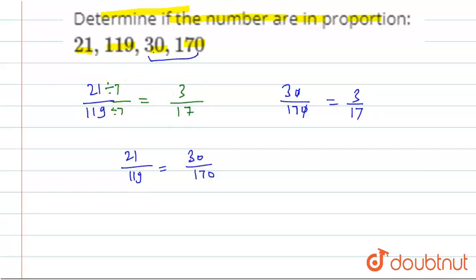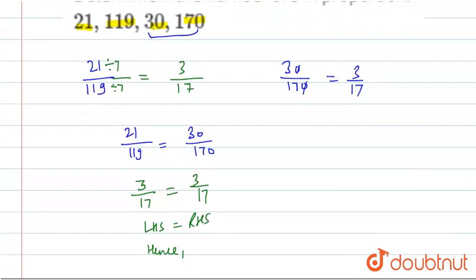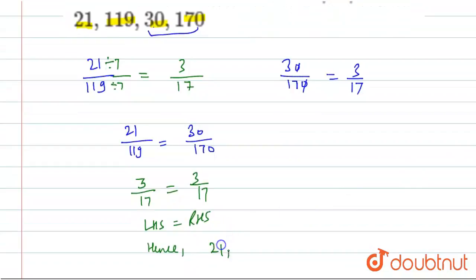Dividing by 7, this equals 3 by 17, and divided by 10, this equals 3 by 17. So LHS equals RHS. Hence we can say that 21, 119,